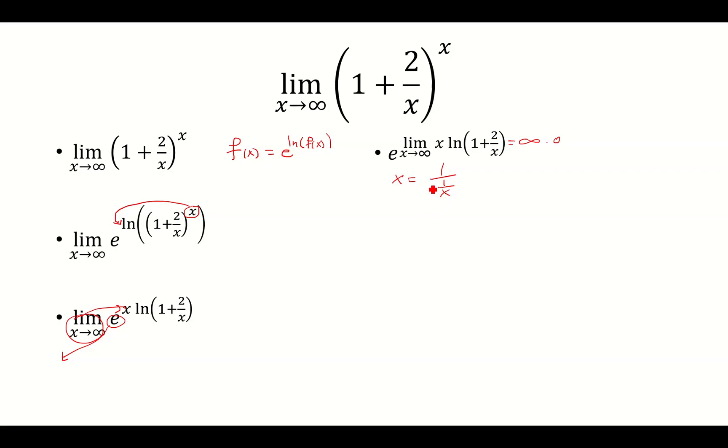Okay, so these are equivalent. And so we have natural log over the 1 over x. Now this is 0 over 0. So we can use L'Hopital's rule.